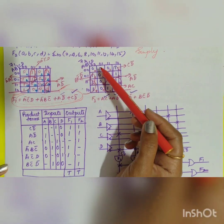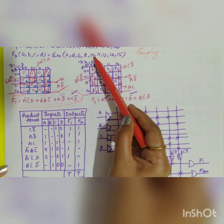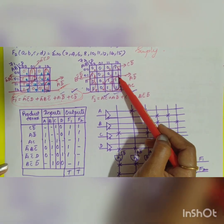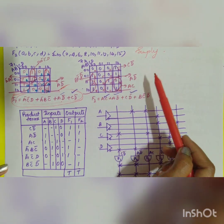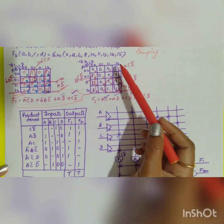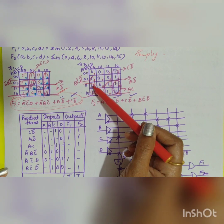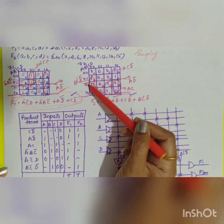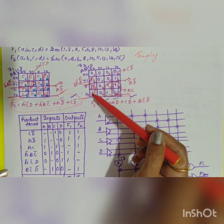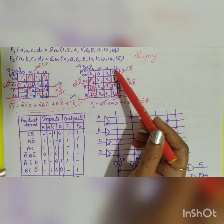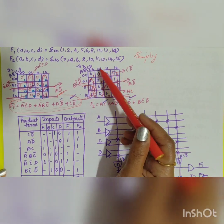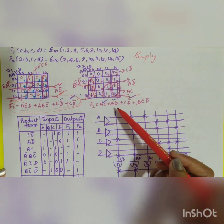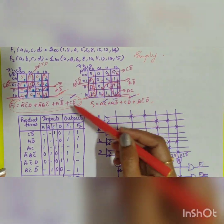For the second function F2, minterms 2, 4, 6, 8, 10, 11, 12, 14, 15 have the value one. These four can be grouped together, and again you have groups of two ones that can be grouped. This gives four product terms for F2 as well. For example, taking a group gives CD̄, and similarly you can derive all other terms to get the sum of product terms.